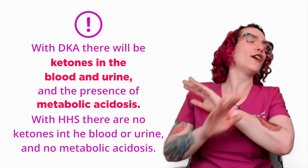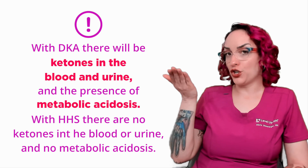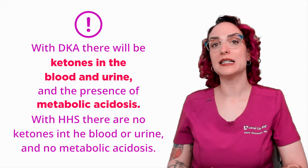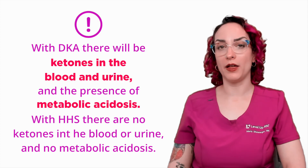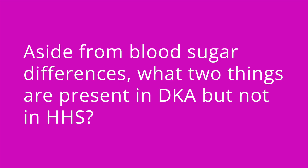Type 1 diabetics have no insulin whatsoever — there is no insulin being produced. So when their blood sugar starts to rise and they're not able to utilize it, we end up needing to liberate those ketone bodies in order to have energy, and in so doing create a state of metabolic acidosis. Quiz question: aside from blood sugar differences, what two things are present in DKA but not in HHS? Answer: ketones in the blood and/or urine, and metabolic acidosis.